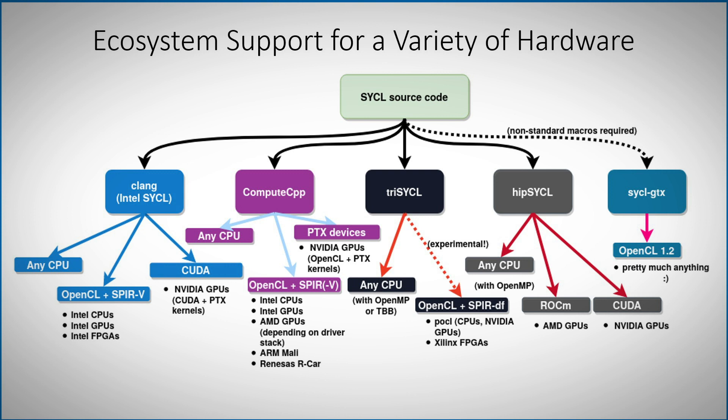The goal of OneAPI is to support vendor-neutral, cross-architecture development. As shown in this diagram, SYCL or similar data parallel C++ programs can be compiled on a growing number of architectures. For example, the Intel OneAPI compiler supports Intel CPUs, GPUs, and FPGAs via the OpenCL or Level 0 backend. But other compilers support NVIDIA, ARM, AMD, and Xilinx hardware through a number of backends.